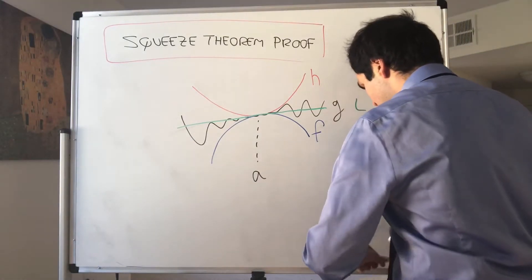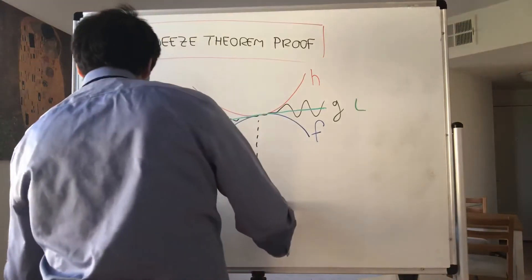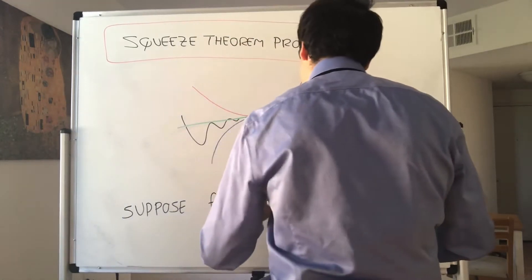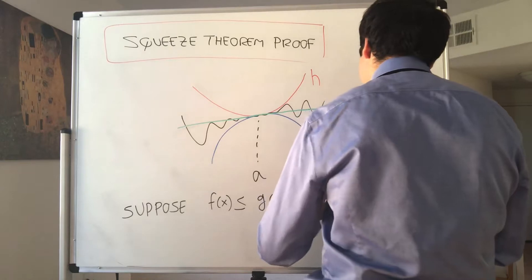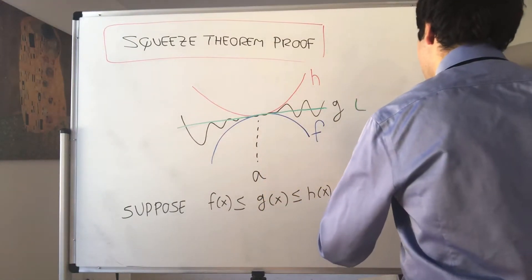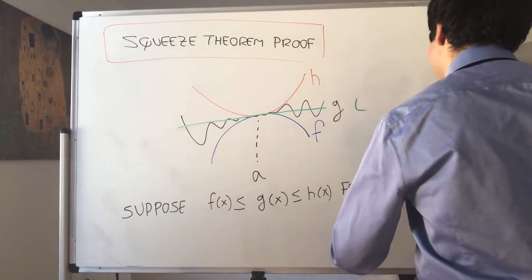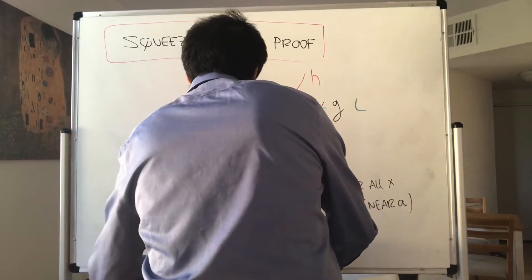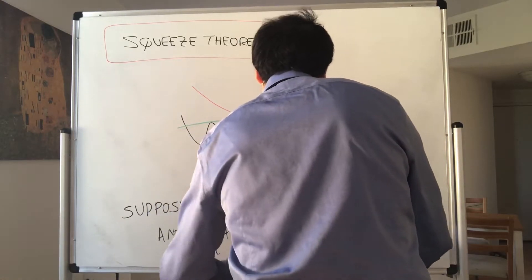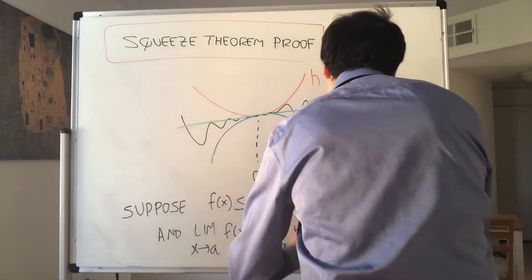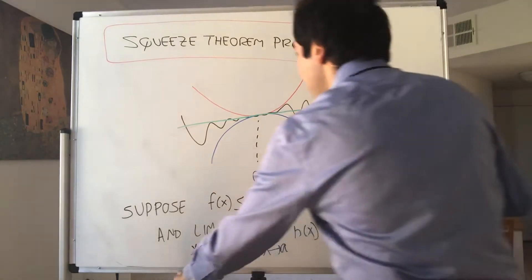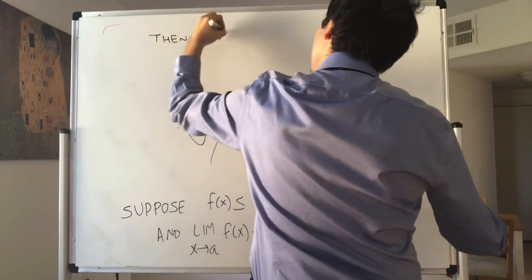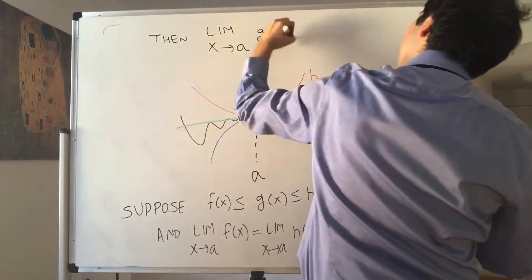So all it says is the following. Suppose g of x is between f and h for all x near a. And the limit as x goes to a of f of x equals the limit as x goes to a of h of x, and it equals l, then the limit of the middle function is also l. The limit as x goes to a of g of x equals l.